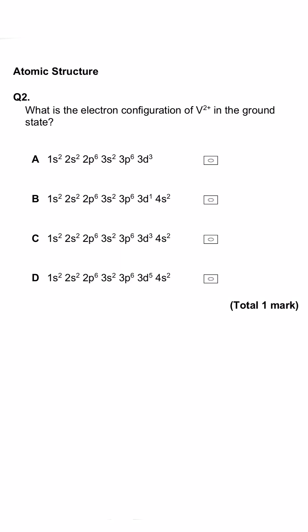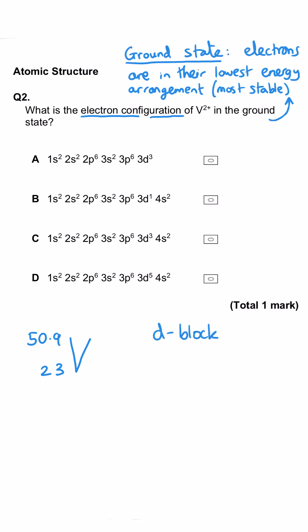This question is about electron configurations and we're focusing on vanadium which is a D block element. Vanadium has got 23 protons normally and therefore 23 electrons. However, because it's a 2+ ion, it has lost 2 electrons. If we count up the electrons in each of these options, we find out that the first two have both got 21, but C and D have got 23 and 25, so they are no good and we can rule those two out.